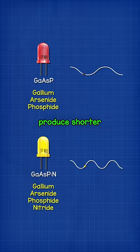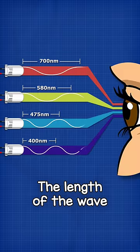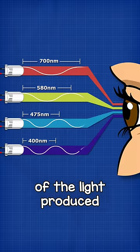Different materials produce shorter or longer photon waves. The length of the wave determines the color of the light produced.